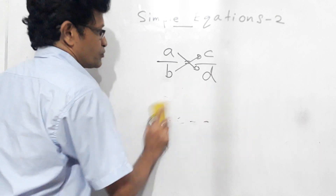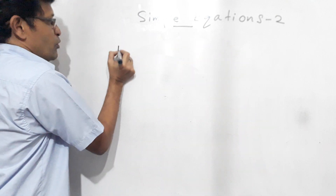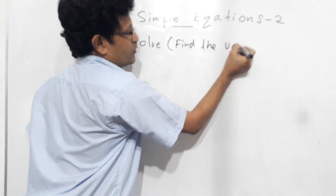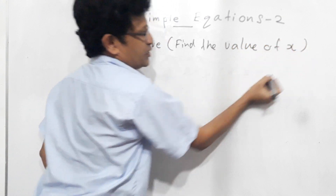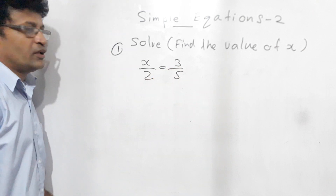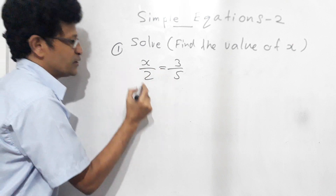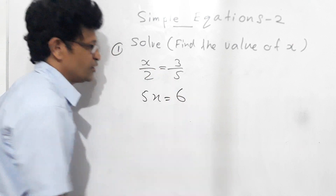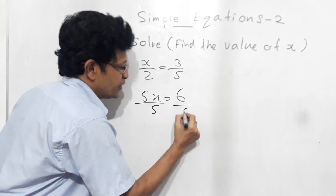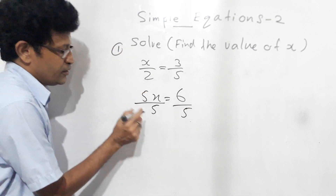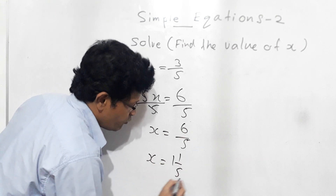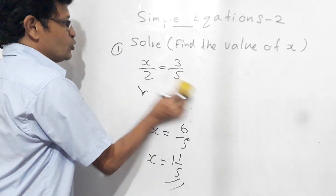Now we will start the lesson. Question number 1: solve and find the value of x. First question: x over 2 equals 3 over 5. We do cross multiplication: 5 into x gives 5x, equals 2 into 3 which is 6. So 5x equals 6. Divide both sides by 5 — the 5s cancel — so x equals 6 over 5, that means x equals 1 and 1 over 5.